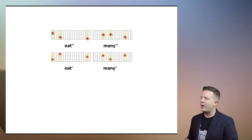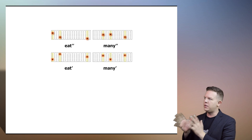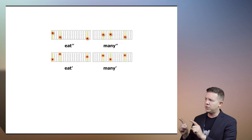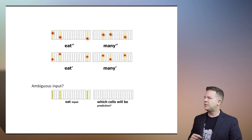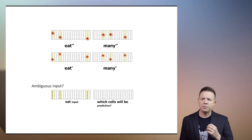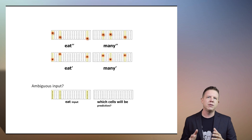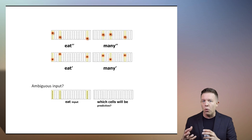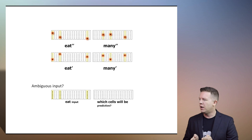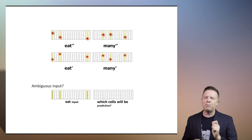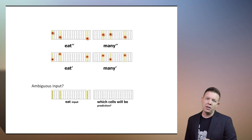So what happens now if we've learned these specific cell activations for these specific spatial temporal patterns? What happens if we send it an ambiguous input? So we were starting off each sequence just sending in boys or girls and the spatial pattern — all the columns activate, all the cells within the columns activate.